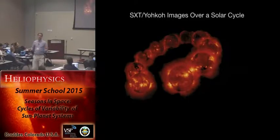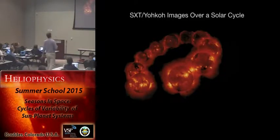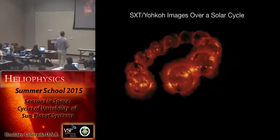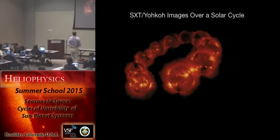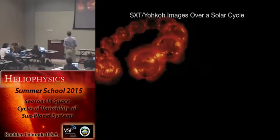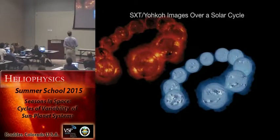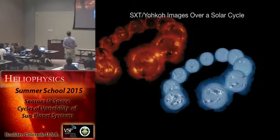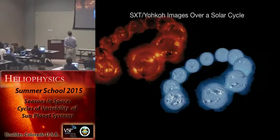Here's a simple plot of soft X-ray images from the Yohkoh SXT instrument over a solar cycle. We can see this is really well correlated with the presence of surface magnetic field. Solar maximum: lots of magnetic field, lots of flux. Solar minimum: very little magnetic flux, very little emission.